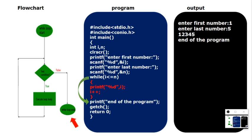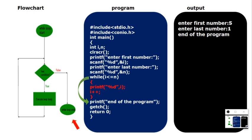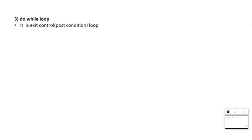Let's take another example — I'll run the program again with first number as 5 and last number as 1. Now it checks the condition: 5 <= 1 — false. So it comes out immediately without executing the body. The output prints directly 'end of program', showing that when the initial condition is false, the while loop body never executes.